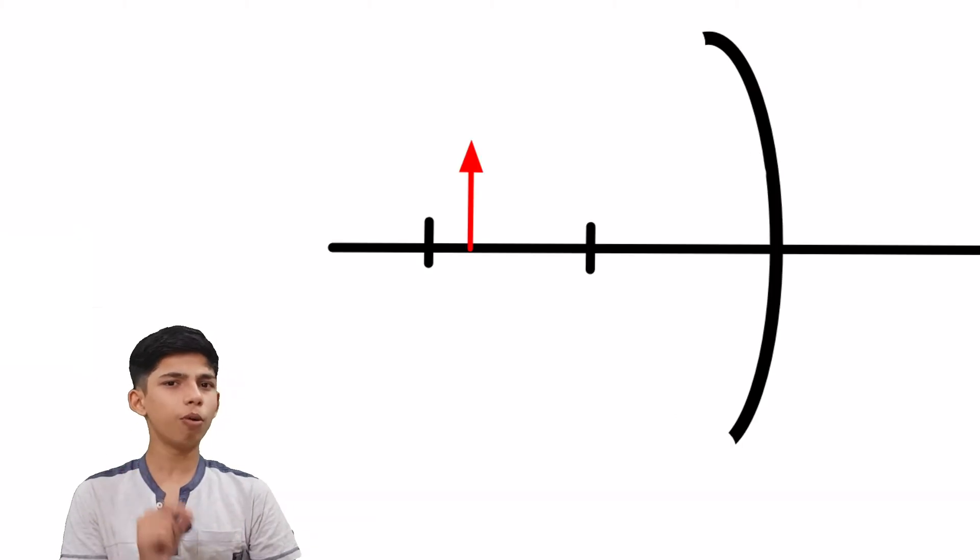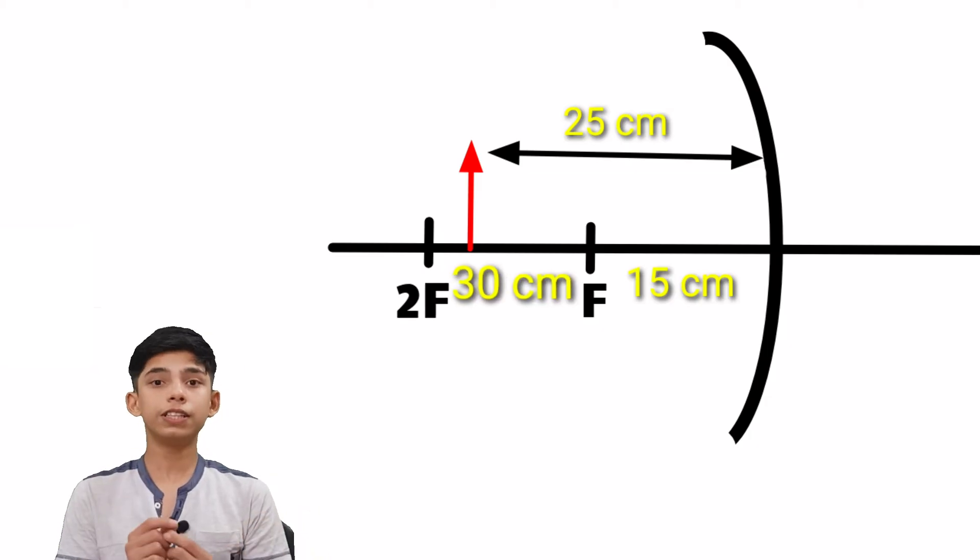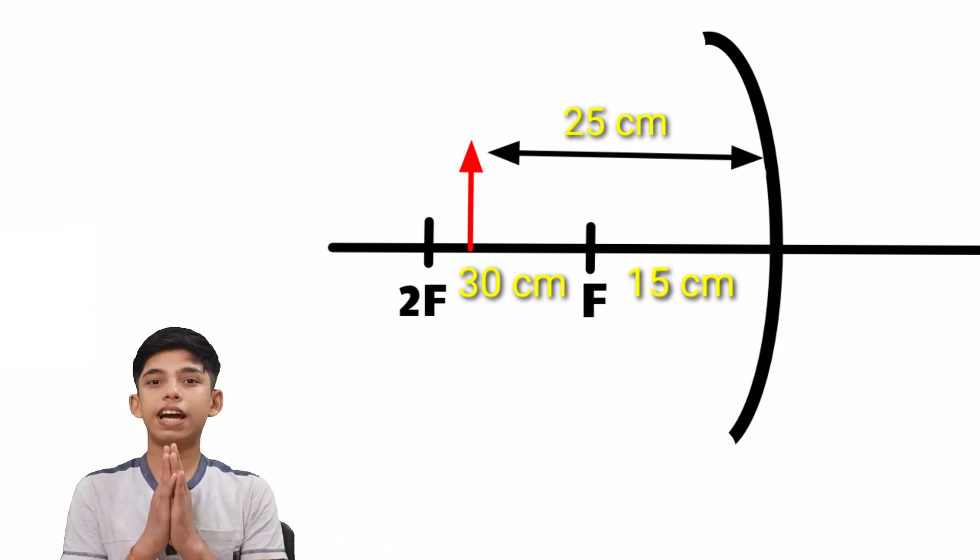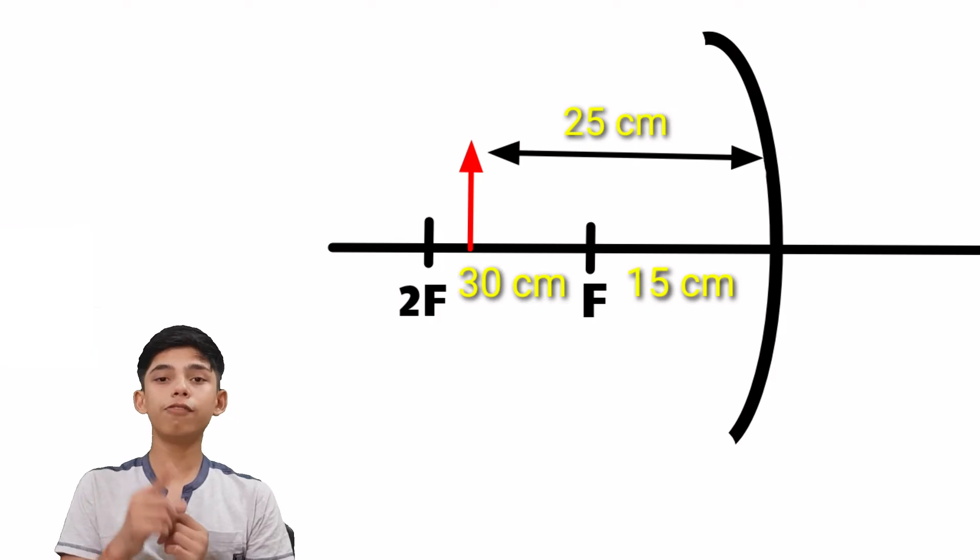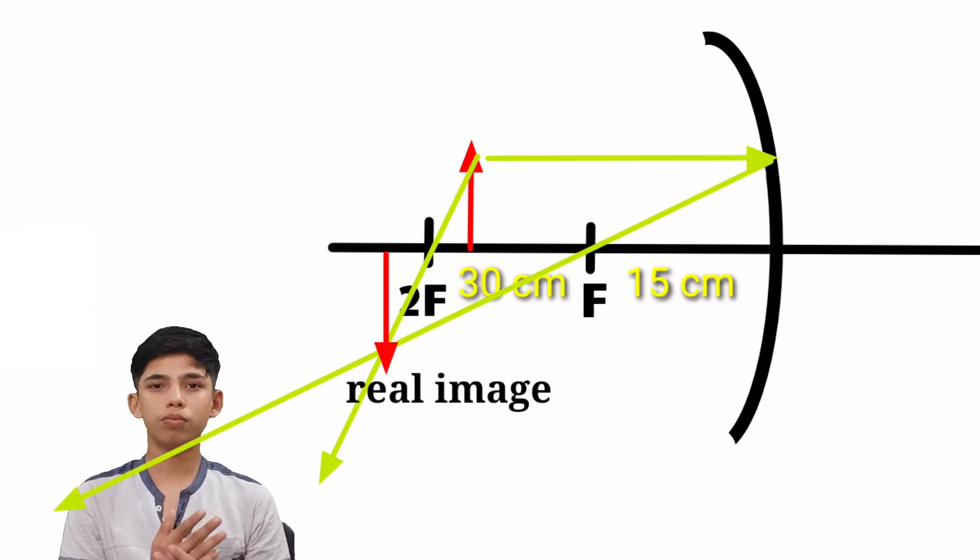In this case our focus is 15, so what is going to be our 2F? Yes, it is going to be 30. Now our object distance is given as 25. We can clearly see that our object is between the focus and the 2F, so it is definitely going to be a real image. I hope that you got this concept and I also hope that you find it interesting. Now let's begin to solve our question.